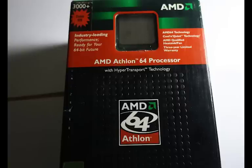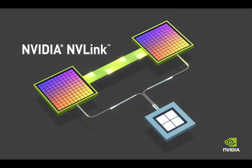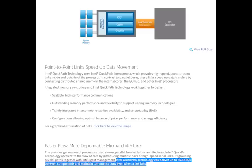So what does the competition have that is equivalent to Infinity Fabric? Intel has Quick Path Interconnect and Nvidia has something called NVLink. While all three are interconnects, not all are equal. Intel's Quick Path Interconnect provides high-speed transport of data between the CPU, the cache, and the integrated GPU, with a theoretical speed cap at 25.6 gigabits per second.